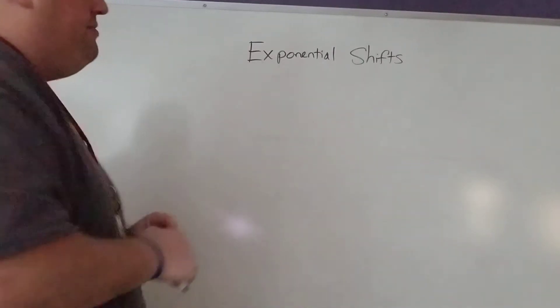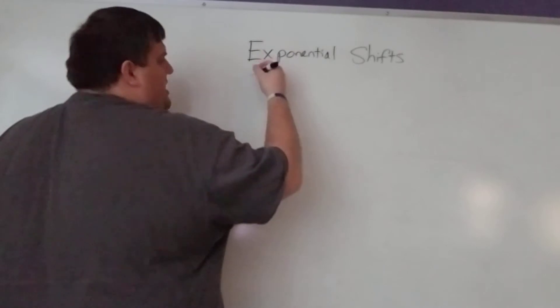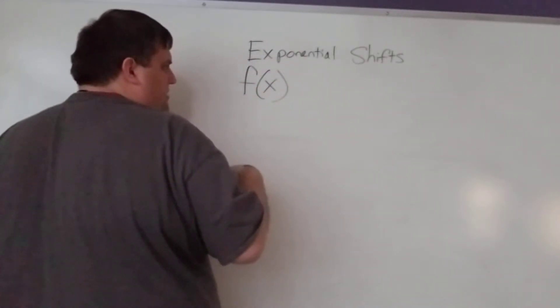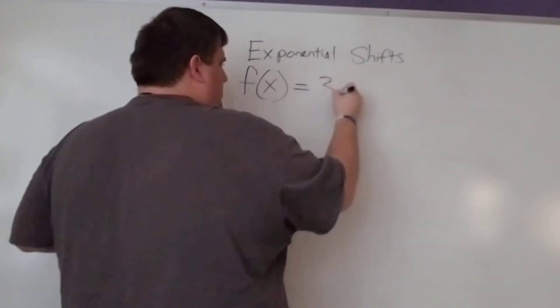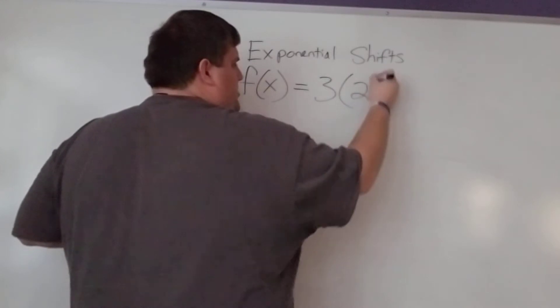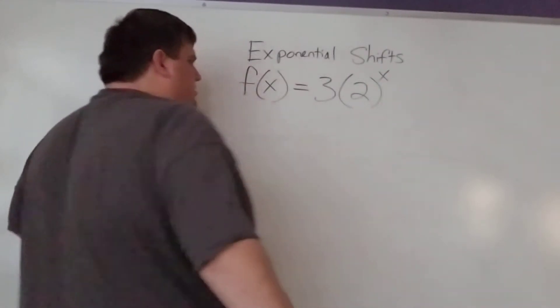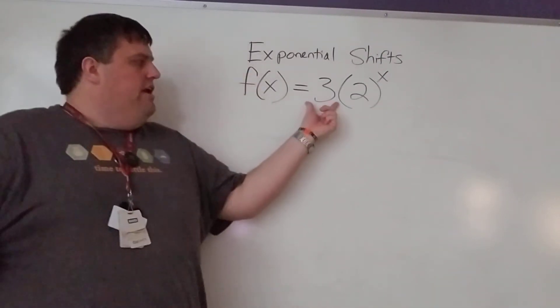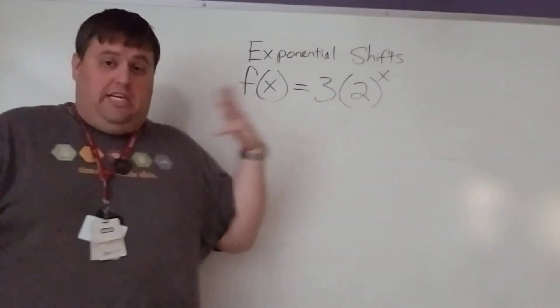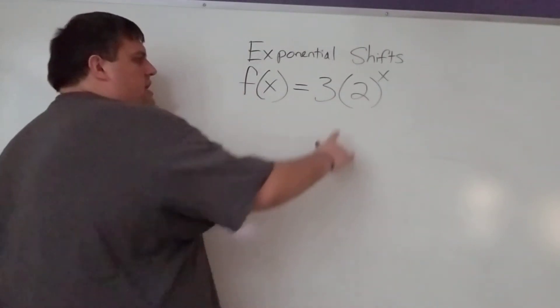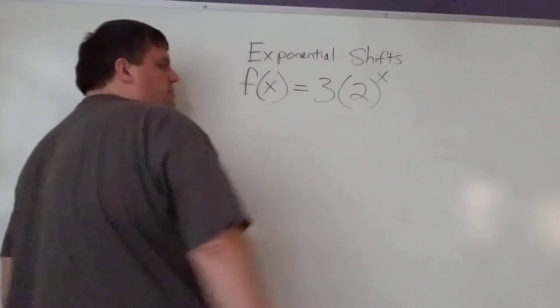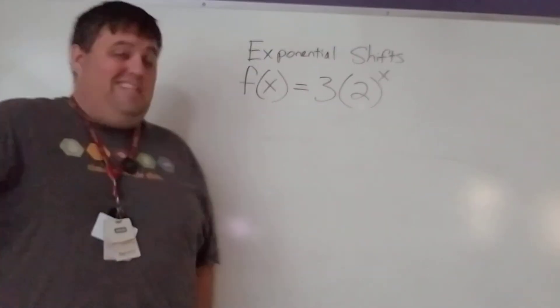So, let's say we have our basic exponential function, f of x equals 3 times 2 to the x, where we know that this number in front is going to be like our y-intercept, that's our initial value, our first number if you will, and then this is our rate, so it looks like this time it's going to double.